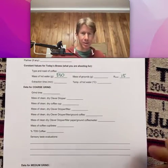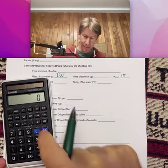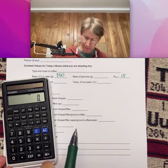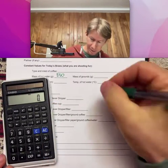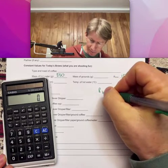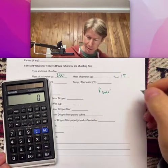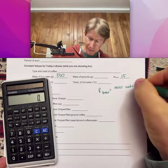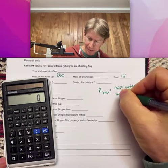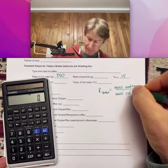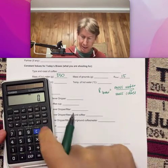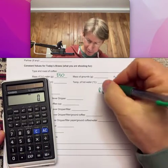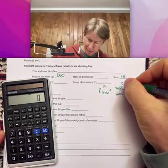So to calculate my mass of grounds that I'm going to use, it's going to be: brew ratio equals mass of water over mass of coffee grounds. So I have 15 here, I have 350 grams there.